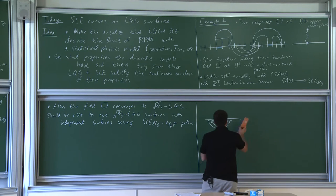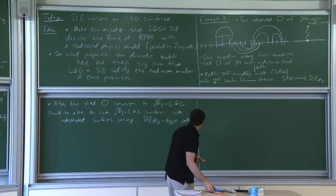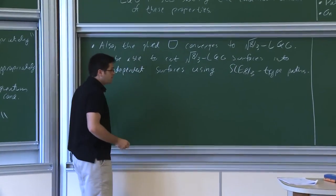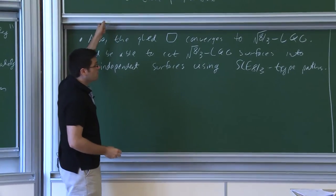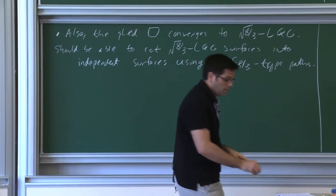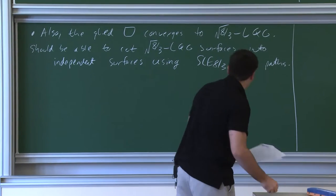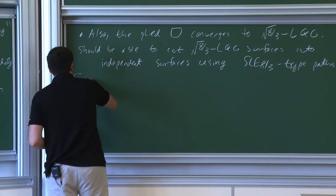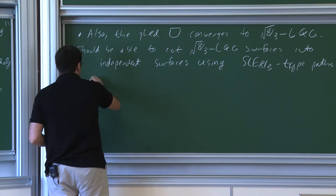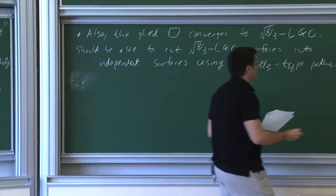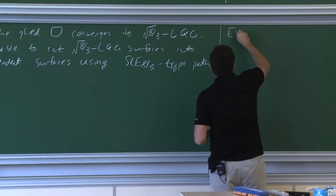These are all just heuristics and motivations for continuum statements we're going to work towards proving. That's the first example. The second example is going to be much more important with regards to the construction of the metric for Liouville quantum gravity.